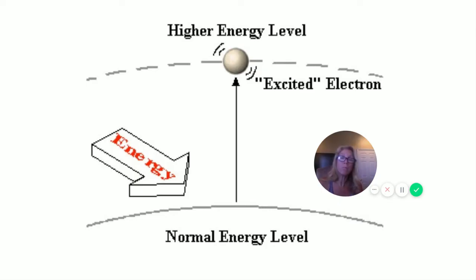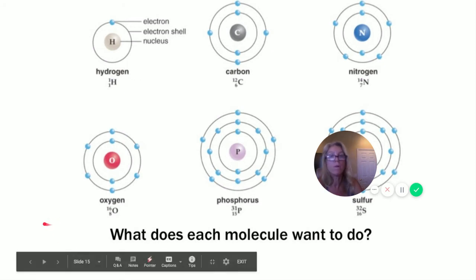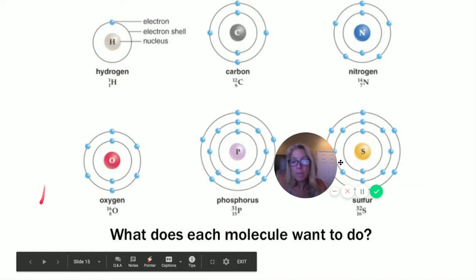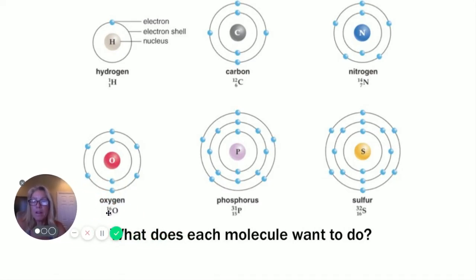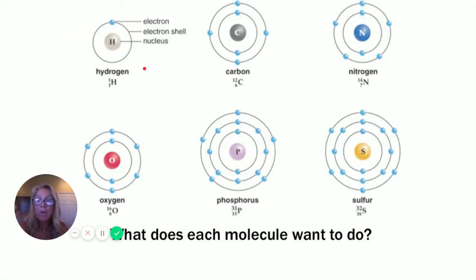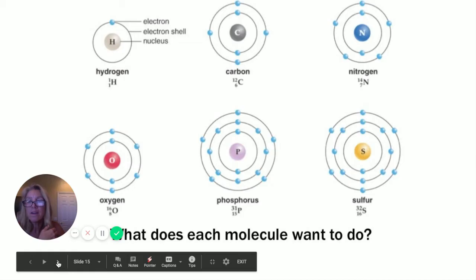Everything we covered is supporting topic 1.2 on your College Board hyperdoc. The next topic — molecules and compounds — supports 1.2 and 1.3. Hydrogen has one valence electron and needs another to be stable, as does carbon, nitrogen, and oxygen. Each element will react with another in order to become stable.